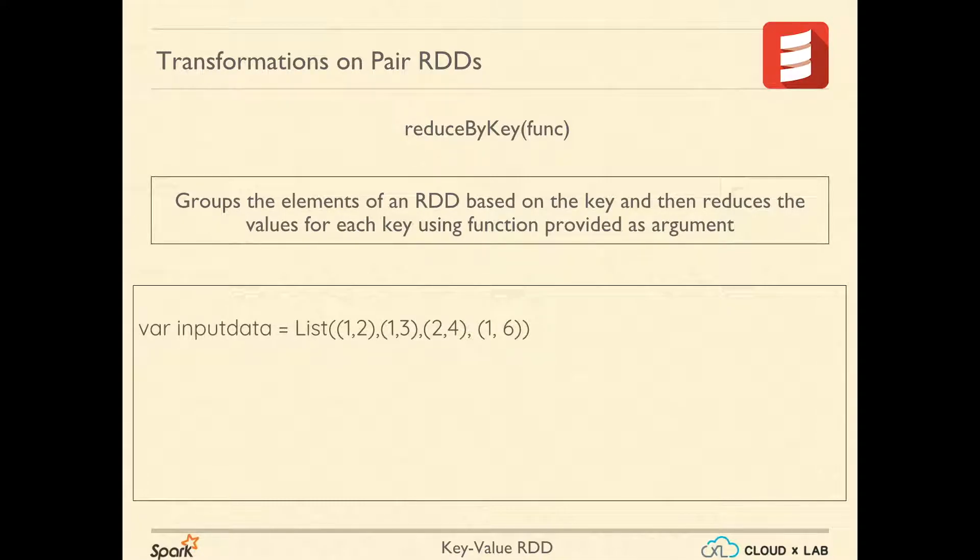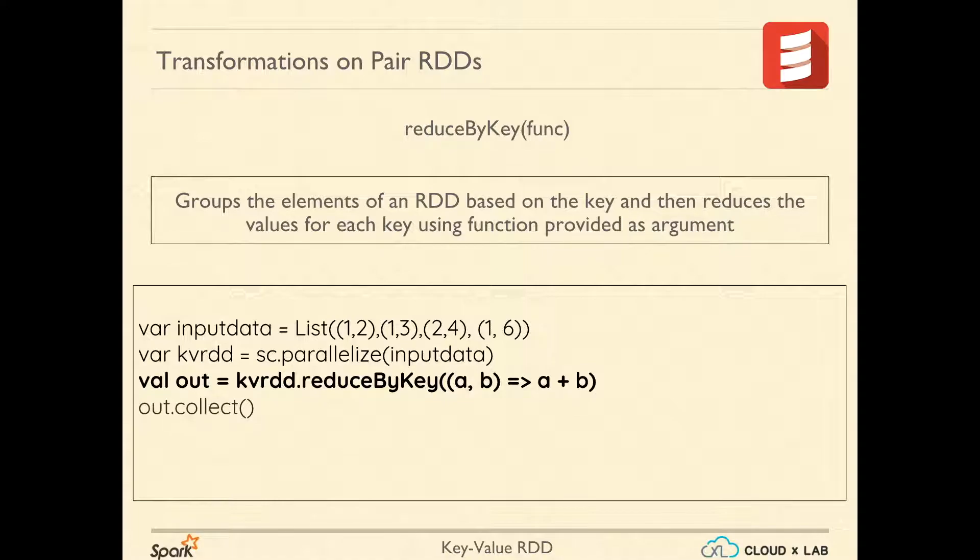You can confirm this by checking the return value, where out equals kvRDD.reduceByKey(a, b => a plus b). ReduceByKey groups data based on the first value of the tuples and combines values for each key using the reduce function passed as argument. Let's collect the result with out.collect. You can see that it has grouped values into two groups with key 1 and key 2, and then computed the sum for each of the keys.